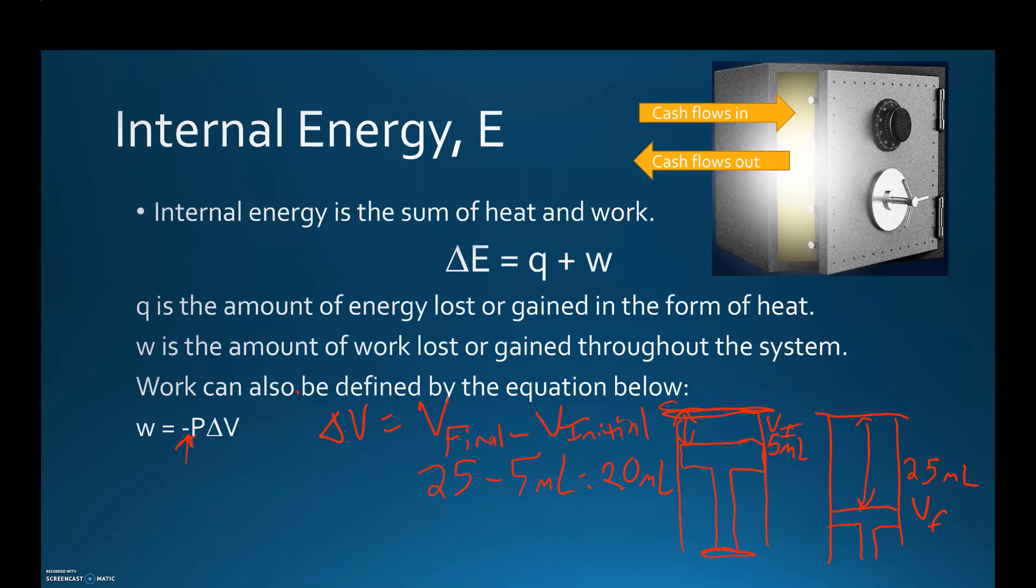Let's say the pressure was one atmosphere. So the pressure was one atmosphere, and we want to solve for work. So work is equal to minus 1 times 20. That's going to be equal to negative 20 atmospheres times milliliters. So the work in this case here is negative. What's that mean? That means that work is being done on the surroundings.